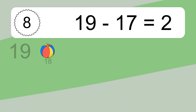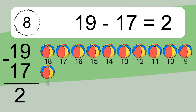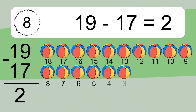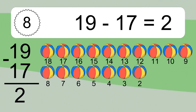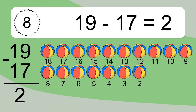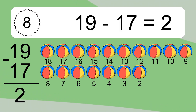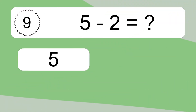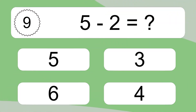19 minus 17 equals what? 19 minus 17 equals 2. Let's count it: 18, 17, 16, 15, 14, 13, 12, 11, 10, 9, 8, 7, 6, 5, 4, 3, 2.